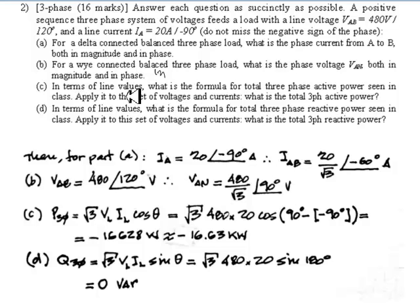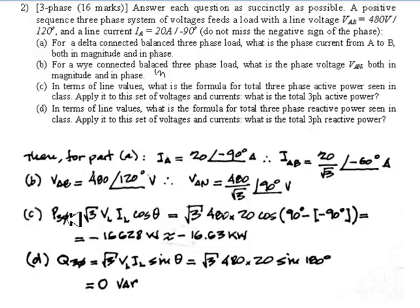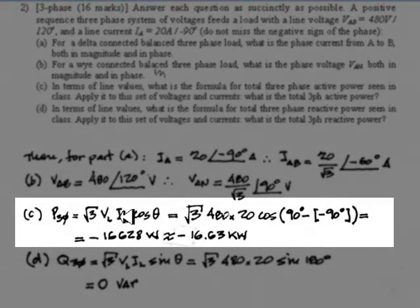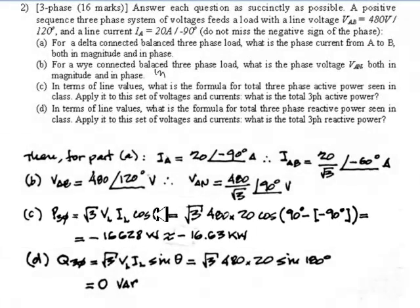Part C: in terms of line values, what is the formula for total three-phase active power? The formula is root 3 × V_line × I_line × cosine(θ), using RMS values. Applying that formula: root 3 × 480 volts × 20 amps × cosine(θ). V_line is 480 volts and I_line is 20 amps.